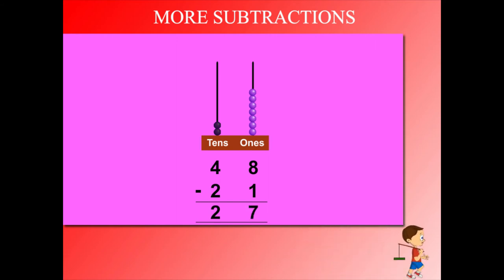So it's 27. Now there are 2 beads in the tens and 4 in the ones, making 24. Subtract 1. So take out 1 bead from the ones.